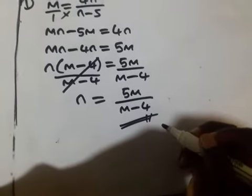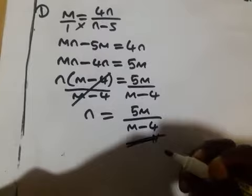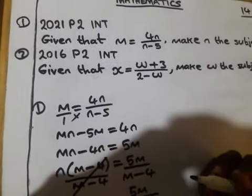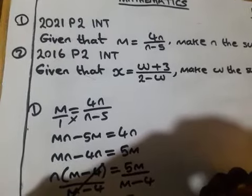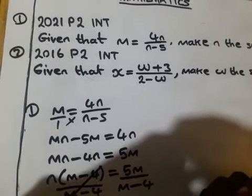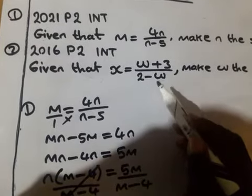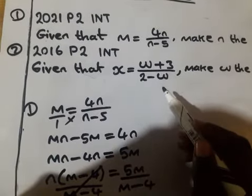So this is where it should end. As for question 2, which came in 2016, given that x equals w plus 3 over 2 minus w.